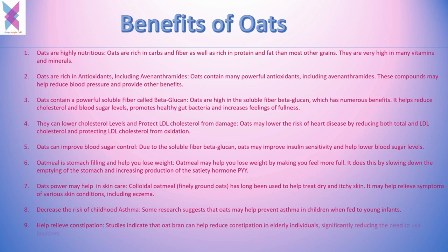Oats can improve your blood sugar level due to the soluble fiber beta-glucan; they may improve insulin sensitivity and help lower blood sugar levels. Oatmeal is very filling and may help you lose weight — consuming oats with other ingredients will keep your stomach feeling full, helping you reduce weight gain. Oats also slow down stomach emptying and increase production of the satiety hormone PYY.